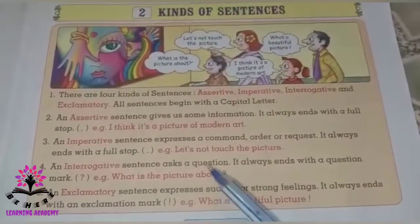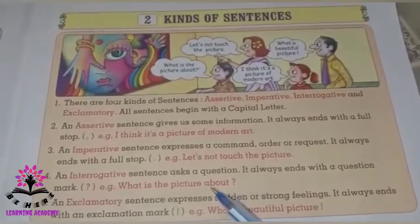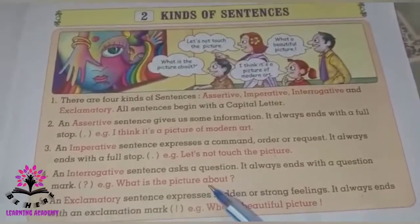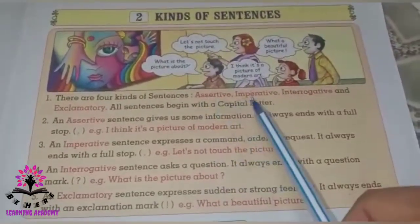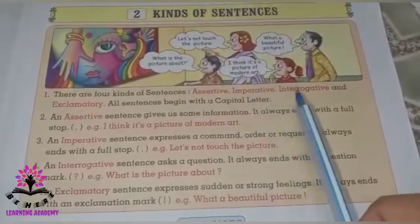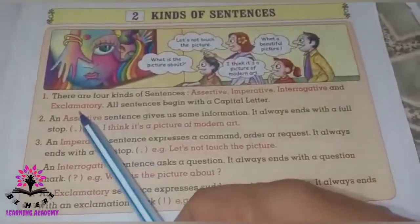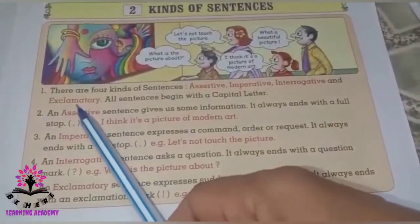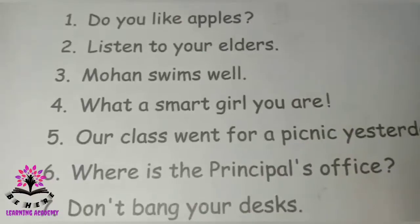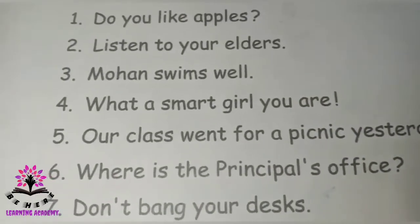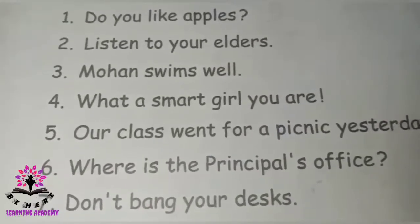So there are four types of sentences, and we have learned today these four types: assertive sentence, imperative sentence, interrogative sentence, and exclamatory sentence. Here are some examples for the different kinds of sentences.